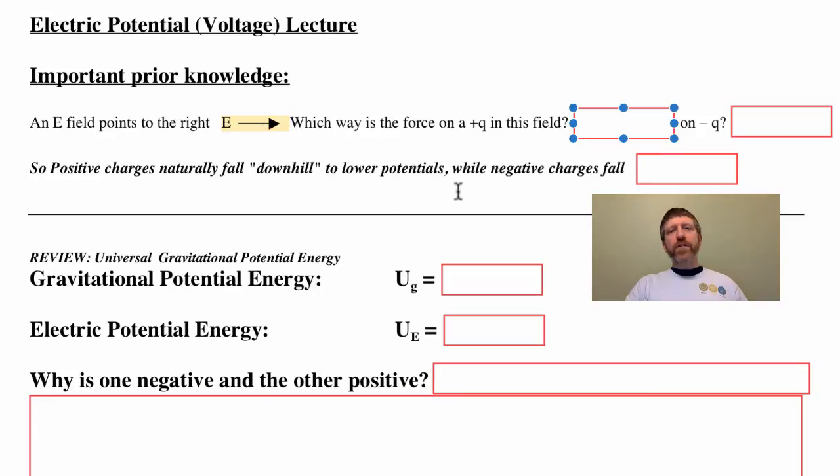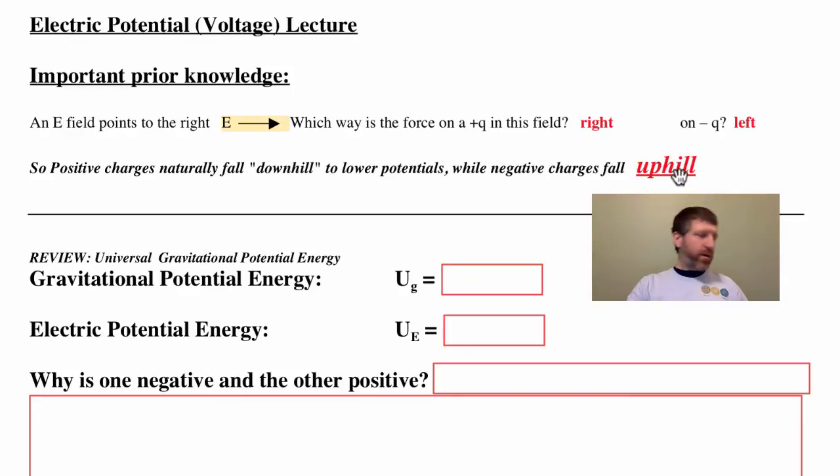Let's start with some important prior knowledge. An electric field points to the right like this - which way is the force on a positive charge that you put in that field? If you remember that the electric field direction is defined by the direction of force on a positive charge, you'll realize that it points to the right. How about if you had a negative charge in that field? Well then you'd have to realize that it points to the left.